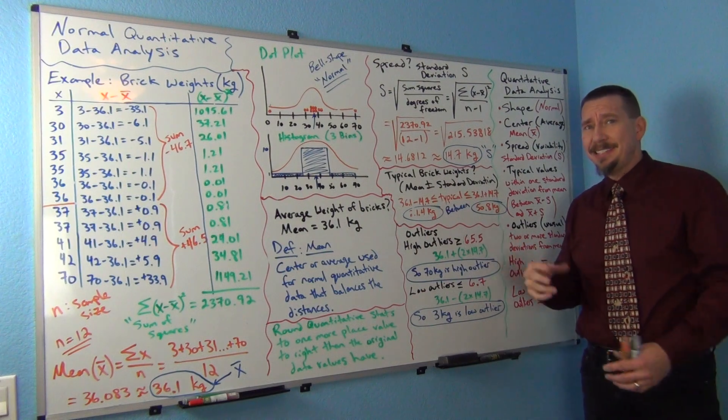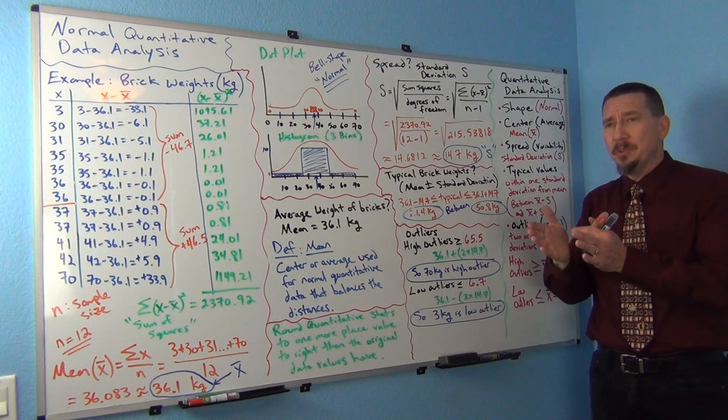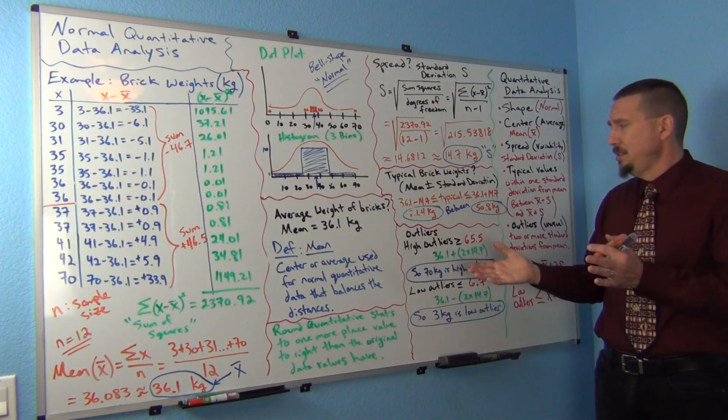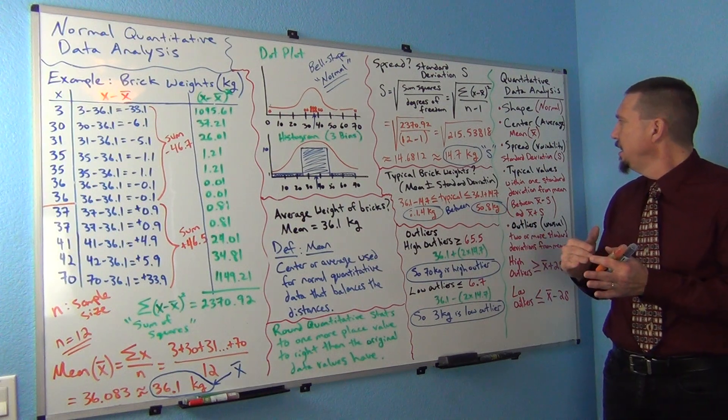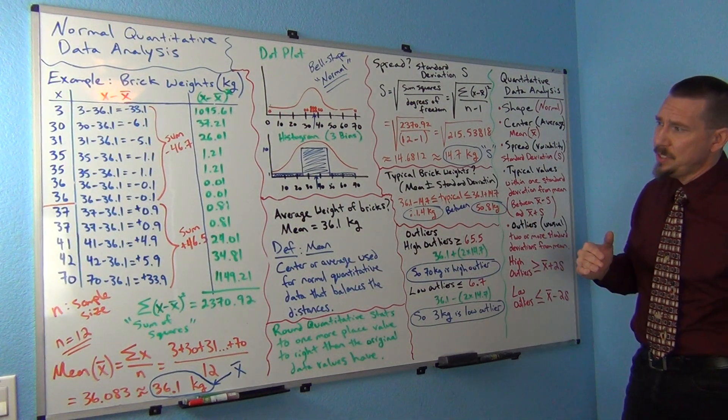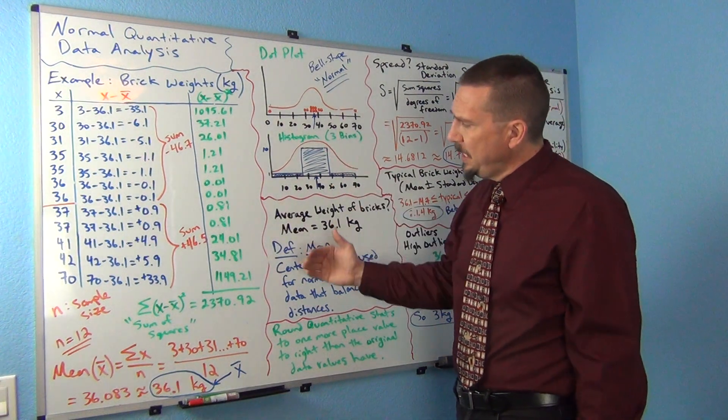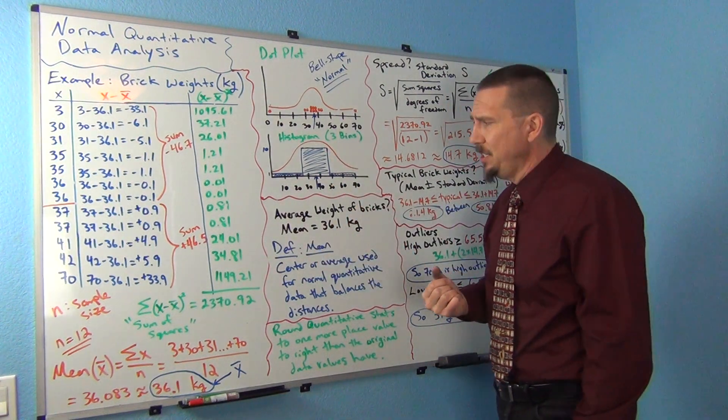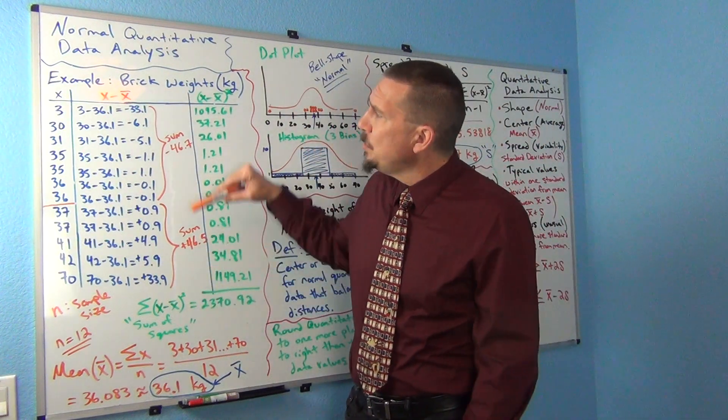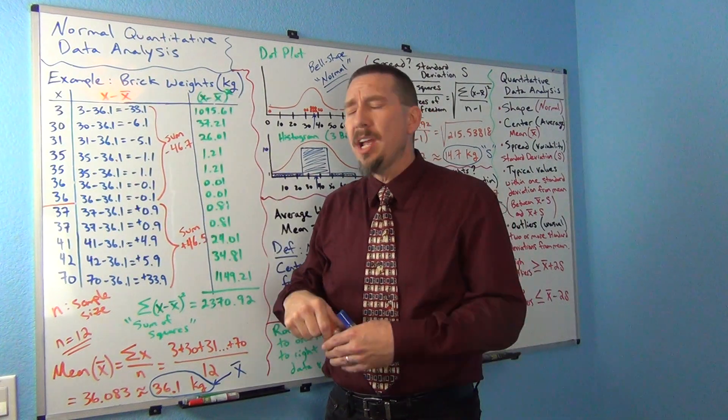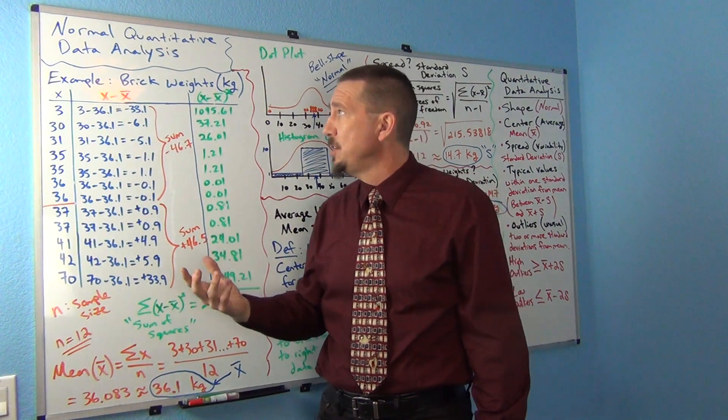But, how do you calculate standard deviation? Well, standard deviation is how far typical numbers are from the mean. So, think of it as the typical distance from the mean. That's a good way of thinking of standard deviation. Let's go back to here and I'll walk you through the calculation.